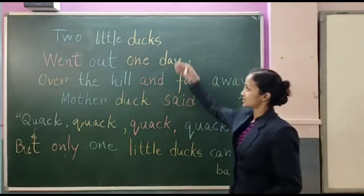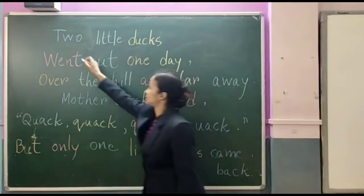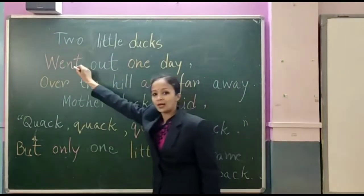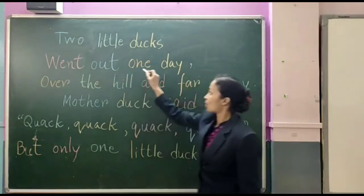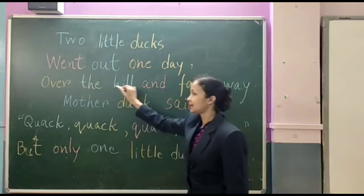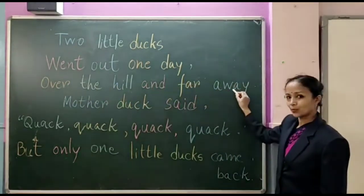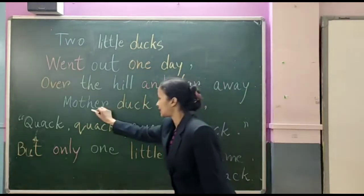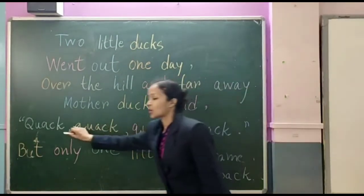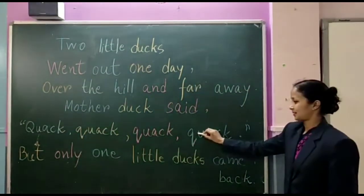Alright then, let's see the meanings. So here are the meanings of the fourth stage of the rhyme. Two little ducks went out one day over the hill and far away. Mother duck said quack, quack, quack, quack.